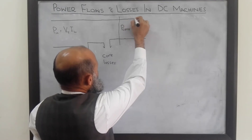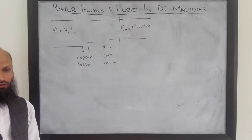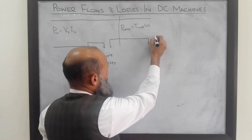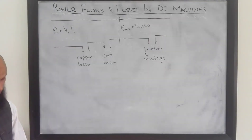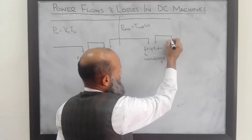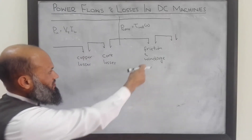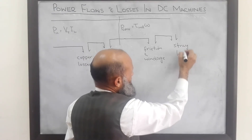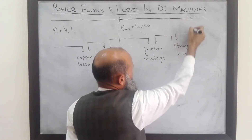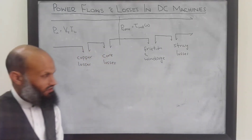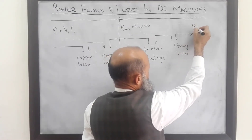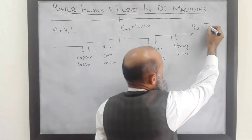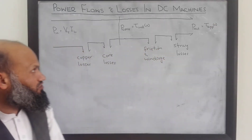This converted mechanical power is not all available at the shaft of the motor. Some power is required to overcome friction and windage losses, and there are stray losses that cannot be accommodated in the other categories. The remaining power is available at the shaft of the motor as output power, which equals the torque applied to the load multiplied by the rotational speed of the motor.